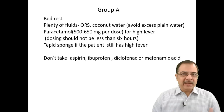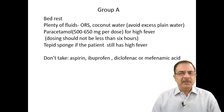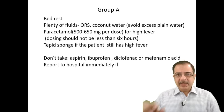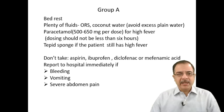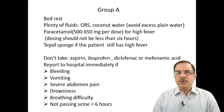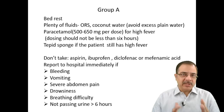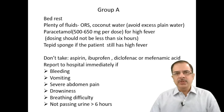Do not advise painkillers like aspirin, ibuprofen, diclofenac, or mefenamic acid — they should not be given. Advise the patient in writing to report to the hospital immediately if any of the following occur: bleeding, persistent vomiting, severe abdominal pain, drowsiness, breathing difficulties, or inability to pass urine for more than six hours. This advice must also be given to caregivers and relatives.